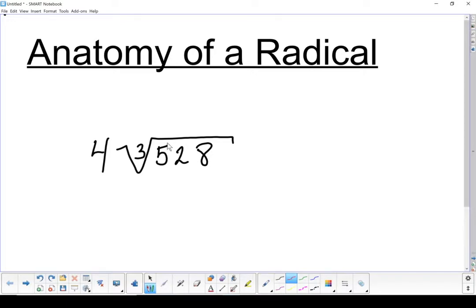Let's start with this part inside the root. That's our radicand. The next part that matters is our index, and that's this little piece right here. Keep in mind that it needs to be inside that little loop.